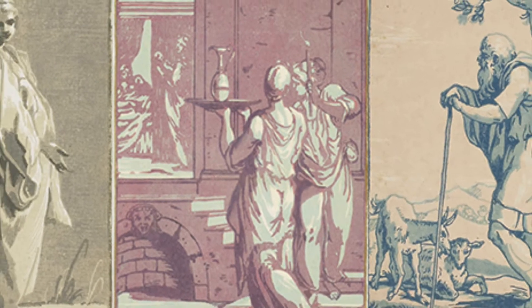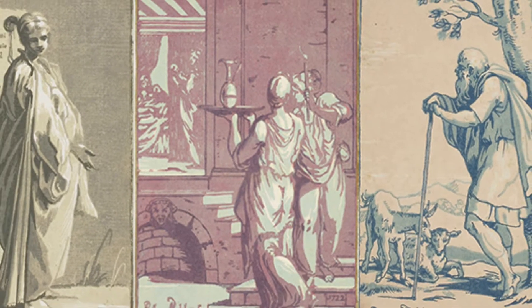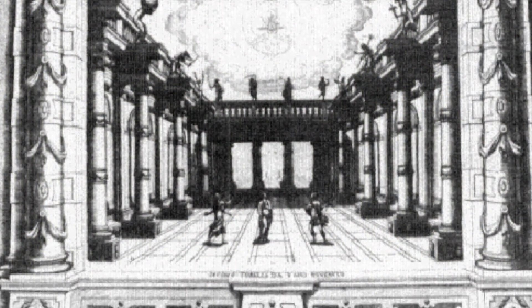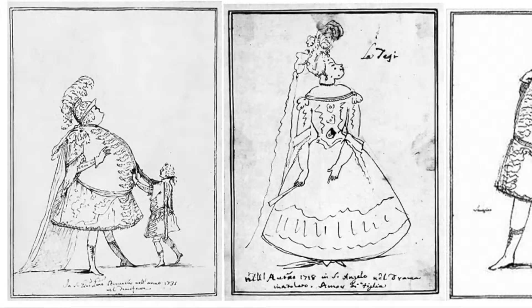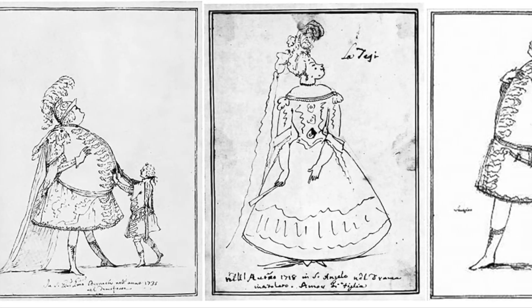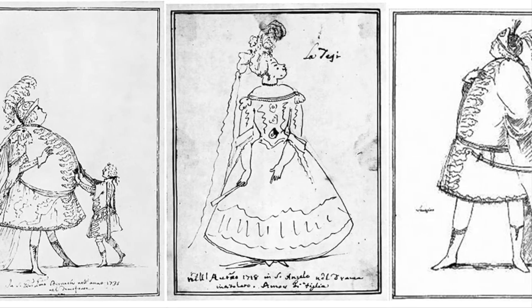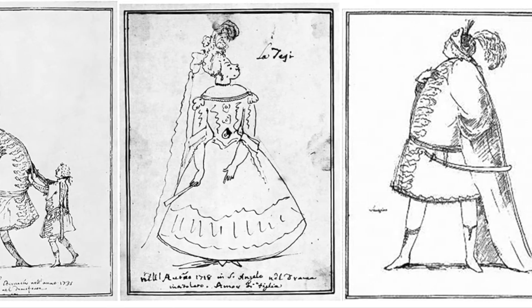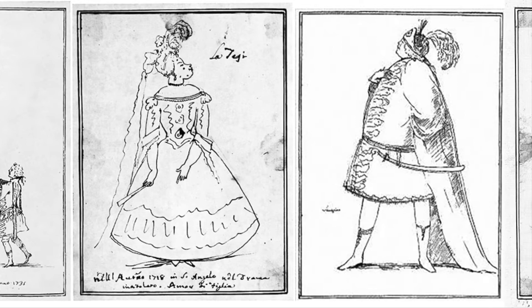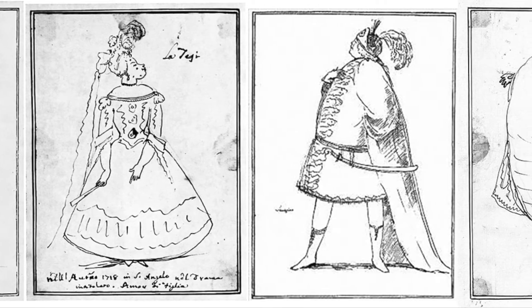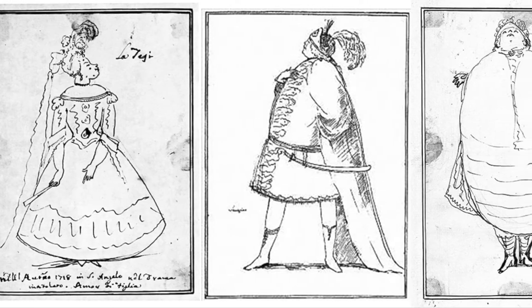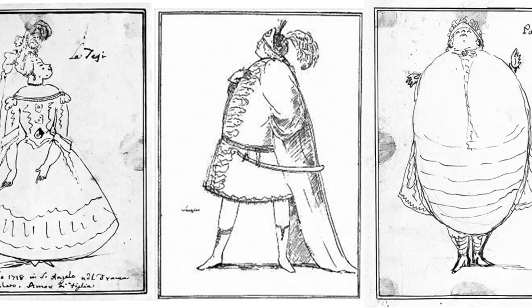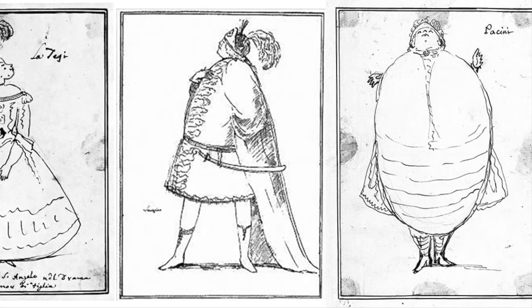He is well known for his album of 350 caricatures. Zanetti amused himself by caricaturing well-known people of his time, above all operatic singers and other figures from musical theater at the beginning of the 18th century. Zanetti's caricatures are part of the satirical movement which accompanied the commercial musical theater from its beginning. The word caricature comes from the Italian words carico and caricare, meaning to load or to exaggerate.